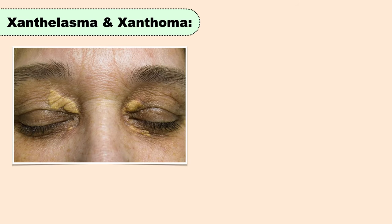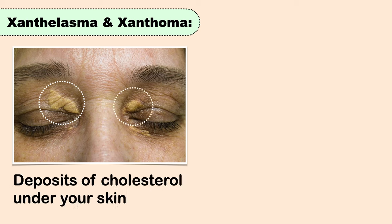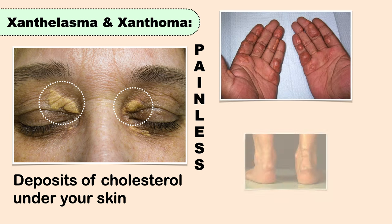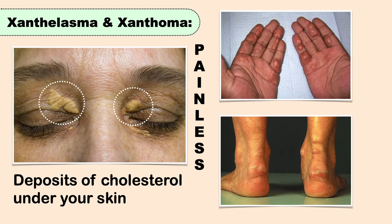If you see yellowish-orange growths on your skin, you may have deposits of cholesterol under your skin. These painless deposits can appear in many areas including the corners of your eyes, lines of your palms, or backs of your lower legs. If you notice these growths on any area of your skin, consult a doctor.